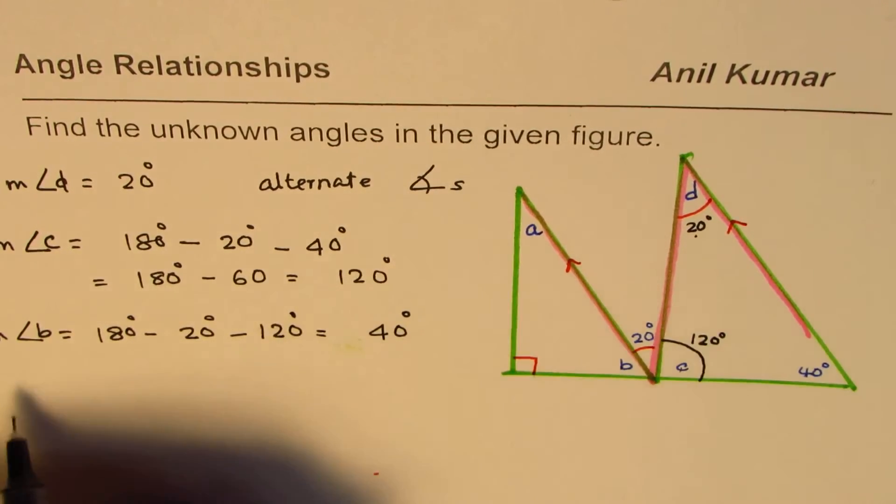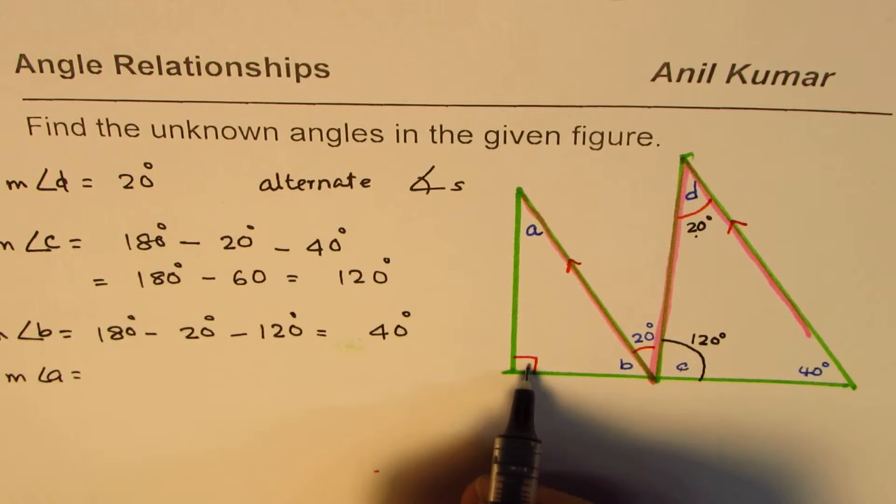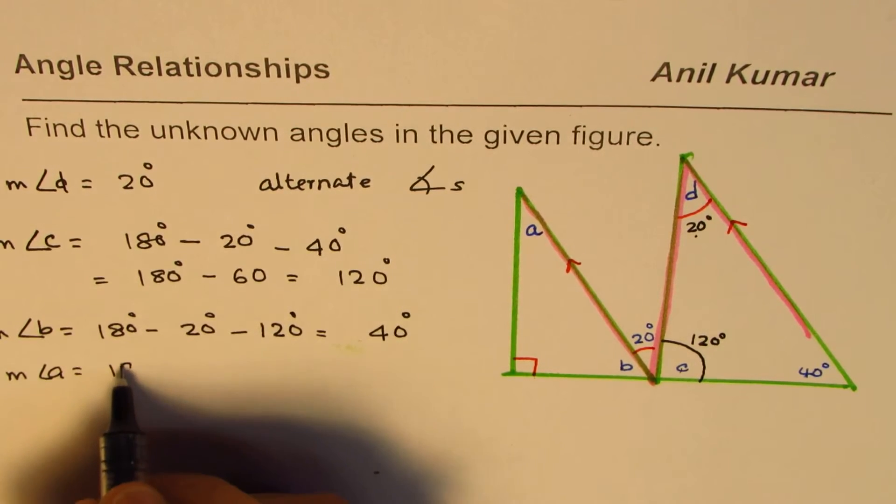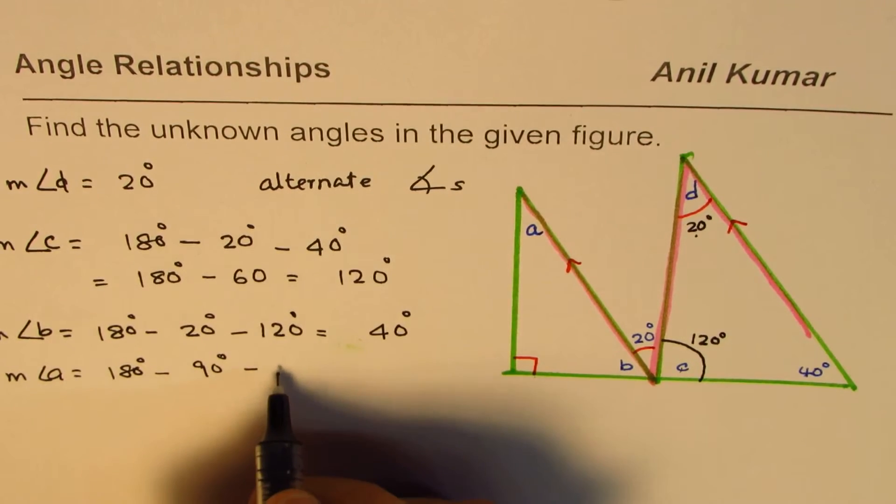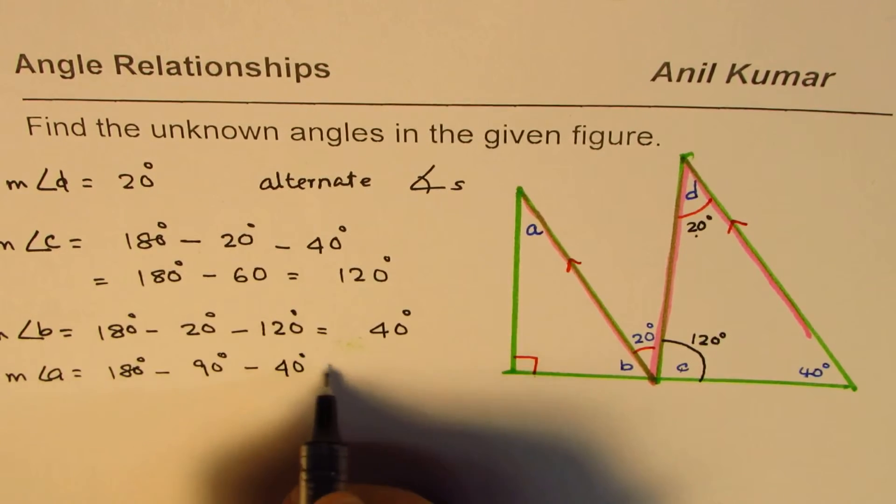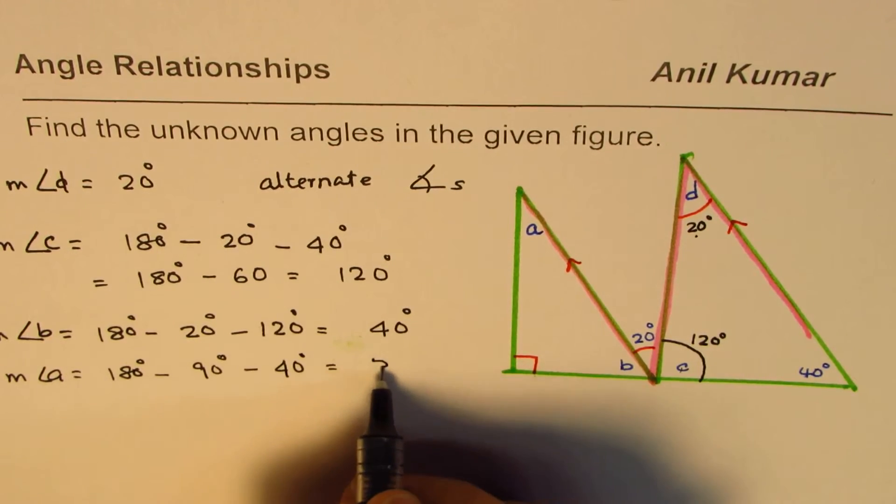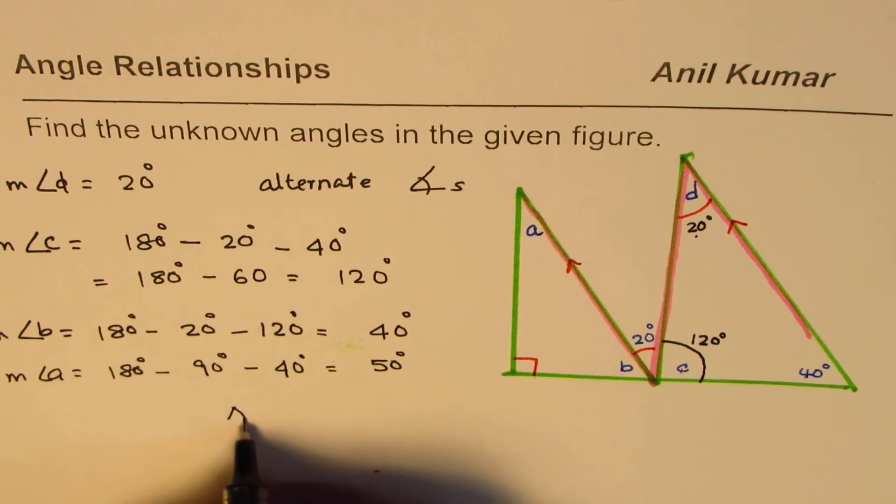To find angle A, we can say this angle is 90, and this is 90. So B is 40. So you can say it is 180 degrees, take away 90 degrees, take away 40 degrees, which is the measurement of angle B. So basically, it is 50 degrees. That is how you can get all the angles.